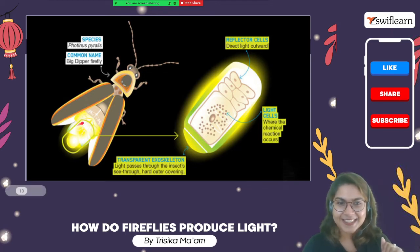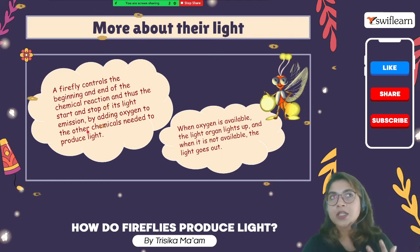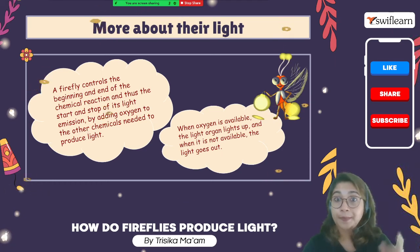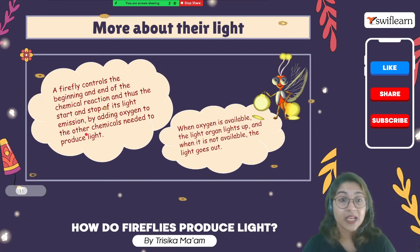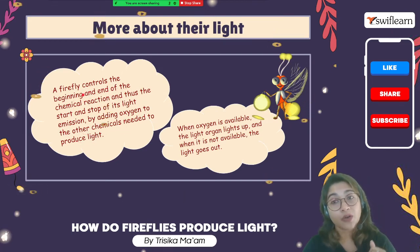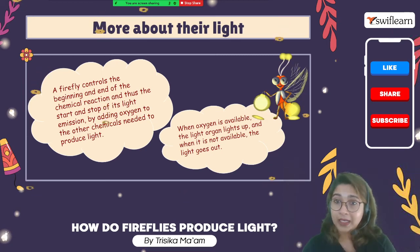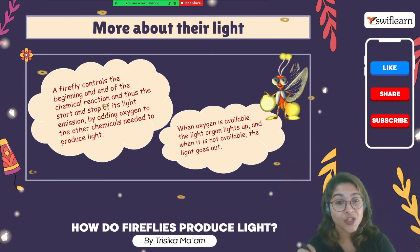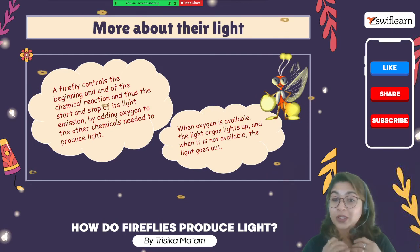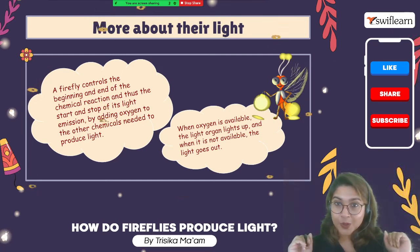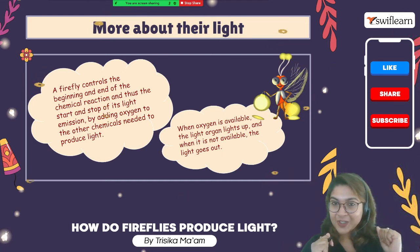Unlike us, who cannot control the chemical reactions within our body, the firefly has this capability — they can produce light as well as control its production. They can add oxygen to produce more light, and in the absence of oxygen they produce less light or the light goes out entirely. By this, they can control the reaction at the beginning and end of the production of light.